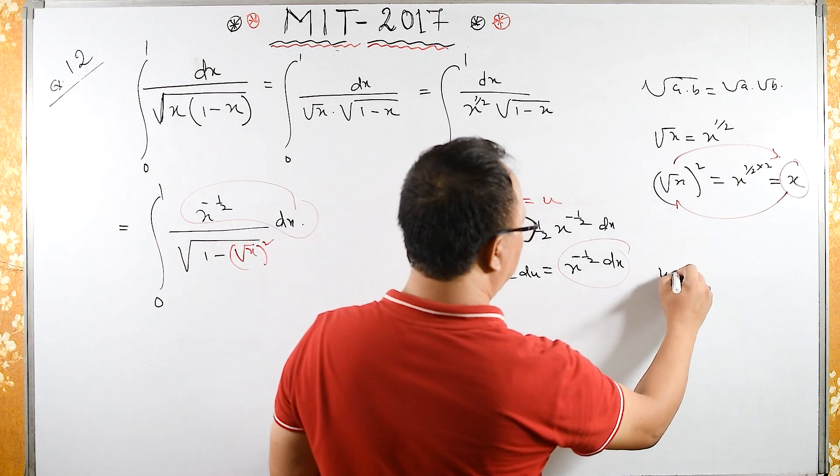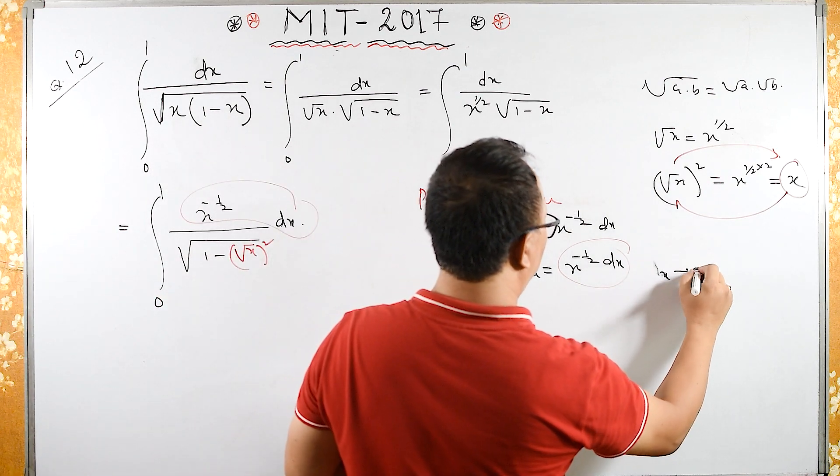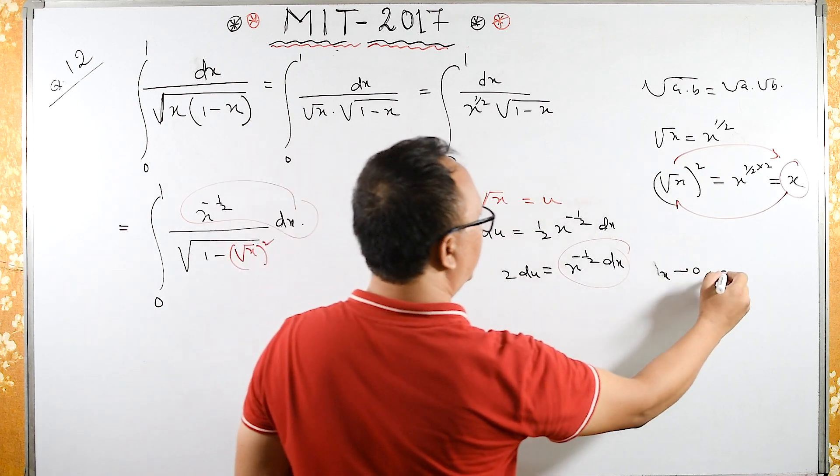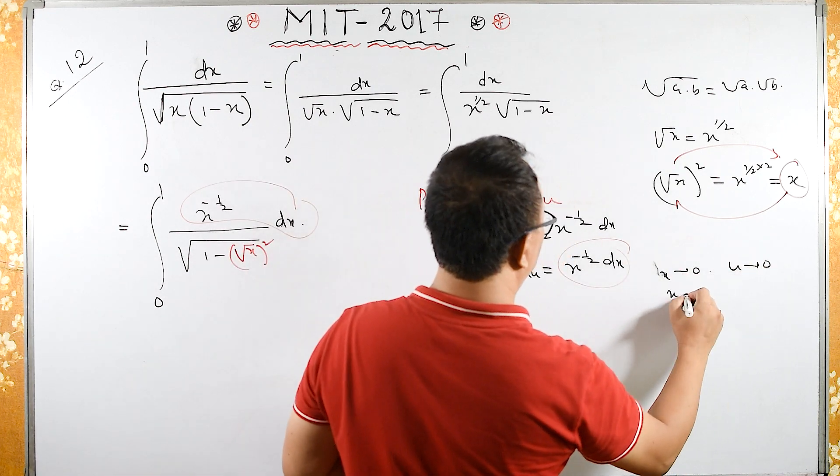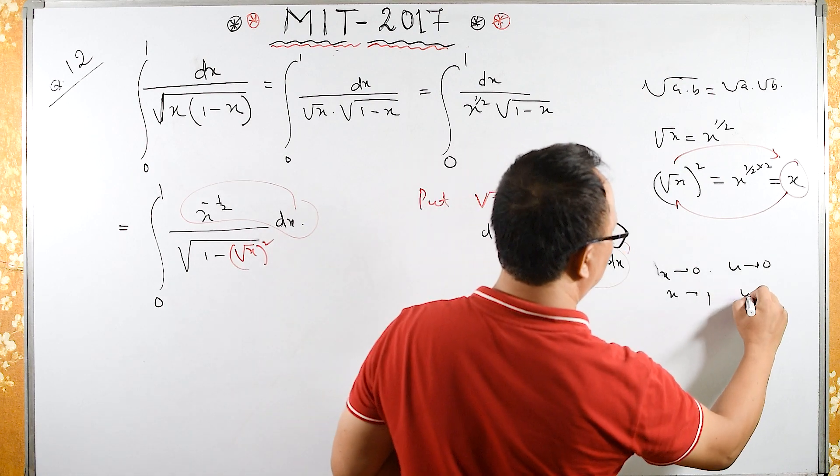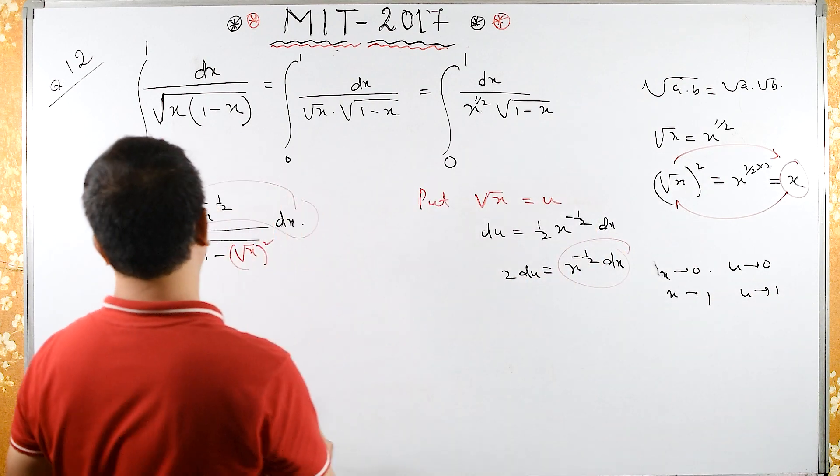When x tends to 0, then u tends to 0, and when x tends to 1, u tends to 1. The limit doesn't change.